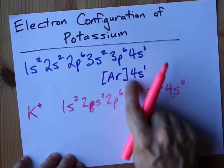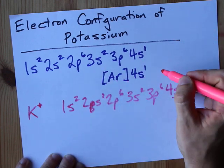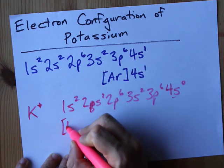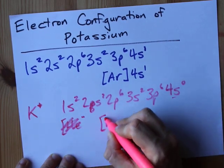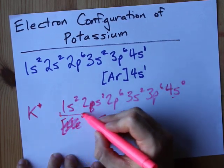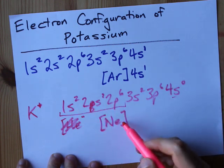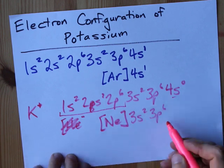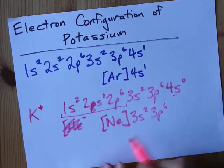Now you're not allowed to simply write AR in square brackets. You have to go back to the previous noble gas from its configuration. That actually for us is NE, at the end of 2p6. So 1s2, 2s2, 2p6 is all encompassed by NEON in square brackets. And then we can write 3s2, 3p6, and show that K plus is right here — iso-electronic with argon, but you're not allowed to just put AR in square brackets.